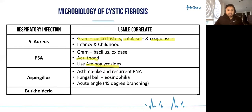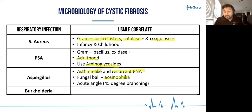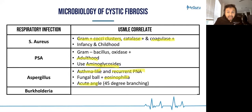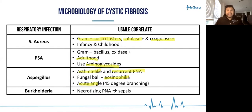Aspergillus is going to present in CF patients as asthma-like symptoms and recurrent pneumonia. Remember they can have eosinophilia because it's a fungal mold species with acute 45-degree angle branching. And finally, if a cystic fibrosis patient has a very pervasive necrotizing pneumonia and sepsis, you're going to think about Burkholderia cepacia, which is also a gram-negative bacteria.